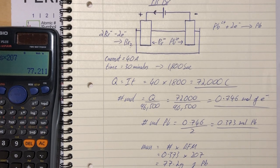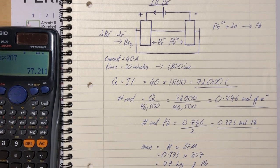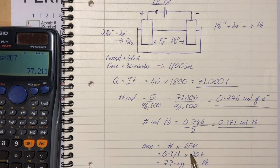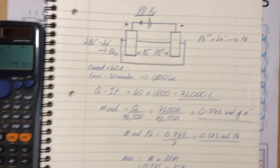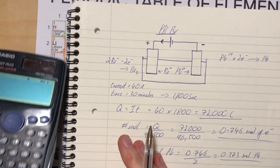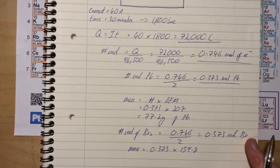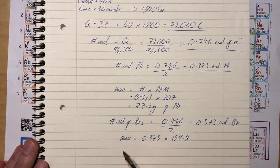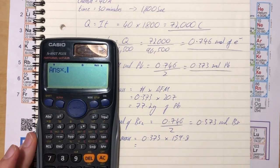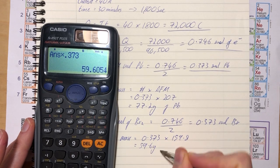Let's find its mass. Mass = 0.373 times the RFM for bromine. Remember it's Br₂, so we double the atomic mass from the periodic table: 79.9 × 2 = 159.8. Therefore, mass = 159.8 × 0.373 = 59.6 grams of bromine gas.